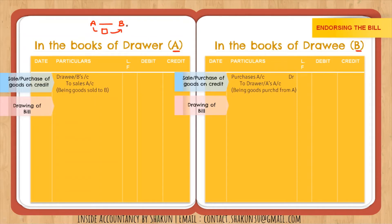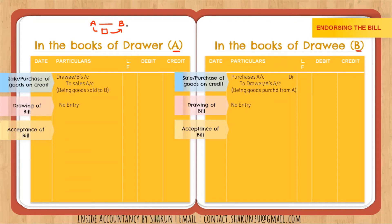A drafts the document and sends it to B. Regarding the drawing or drafting of the bill, there is no journal entry. Whenever the question states that the drawer is drawing or drafting the bill, you do not need to pass any entry for that.